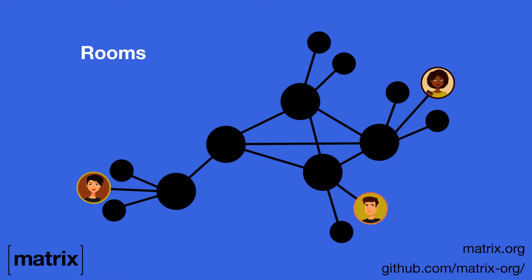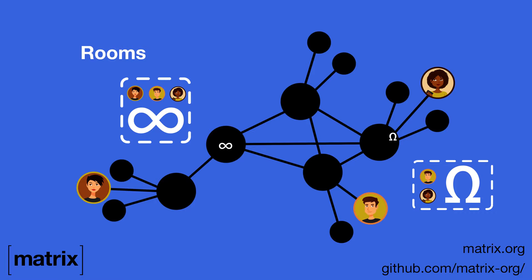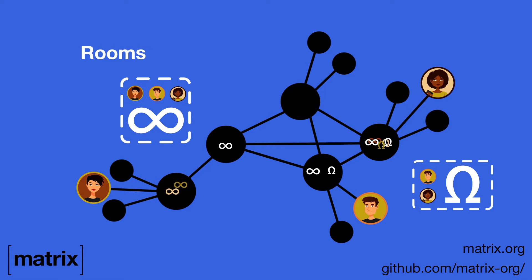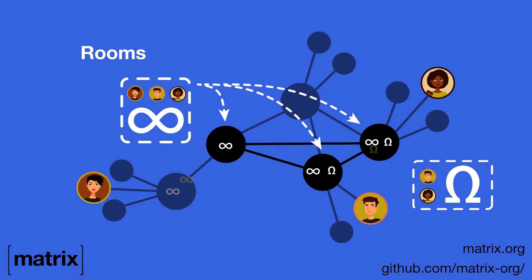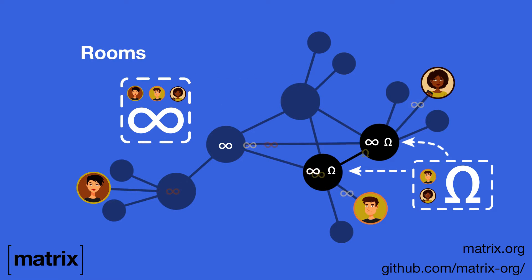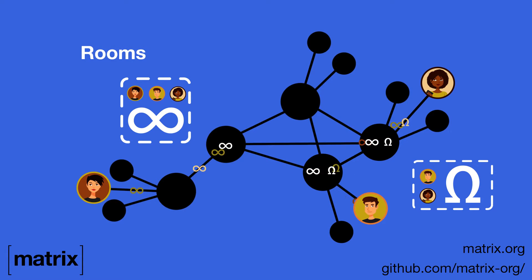Matrix uses the concept of rooms for both one-to-one and group communication. When you send a message to a room in Matrix, each user in that room is sent a copy of that message. However, different users may be located on different home servers, so the servers exchange the data on a need-to-know basis. All the servers that have a user in a room will now have a copy of the conversation in that room. There is no single main server, and the room doesn't belong to any one server. It belongs to multiple servers, and it does not go away even if one of the servers is temporarily unavailable.